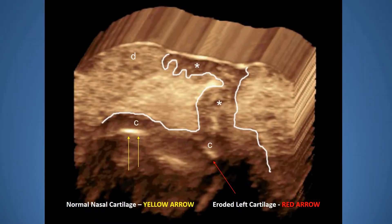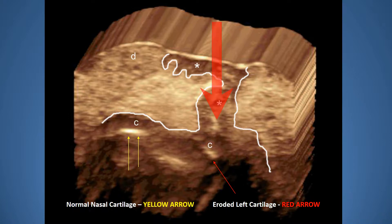Here we notice a basal cell that's destroying the cartilage — it's called an hourglass basal cell. The stars show where it started, but then the tumor goes down like an iceberg and starts invading the cartilage. This is very important to know preoperatively.